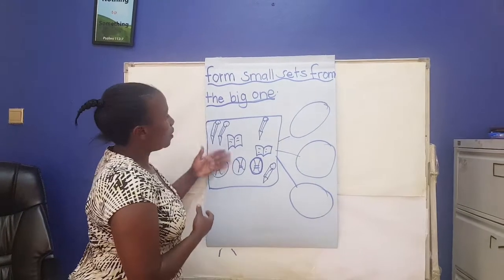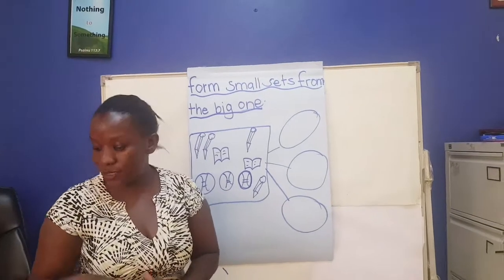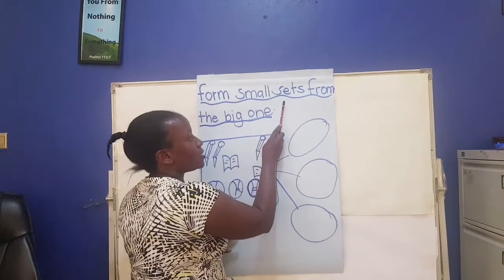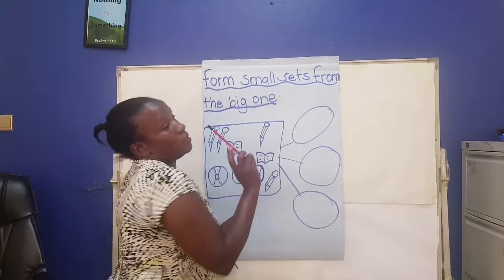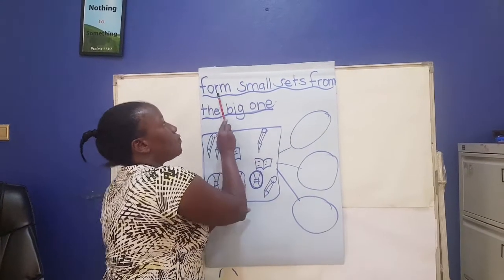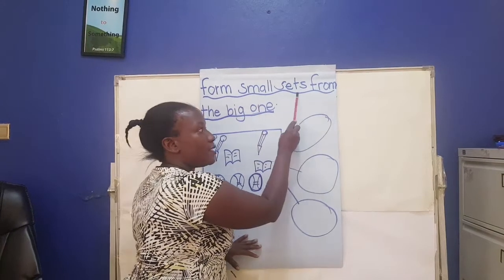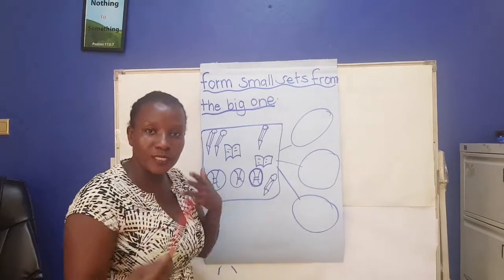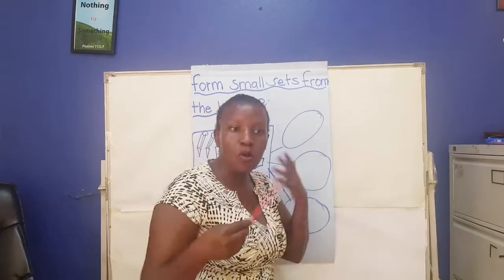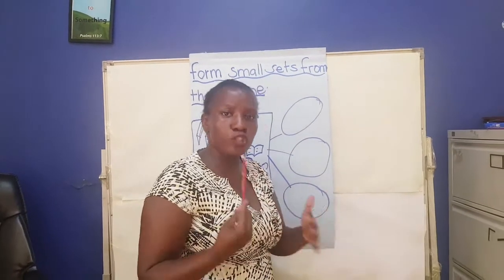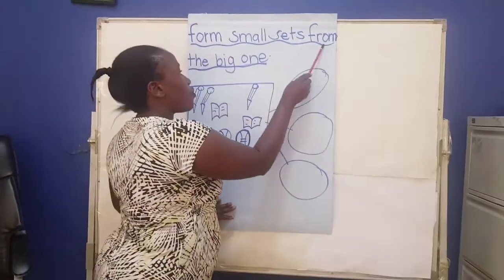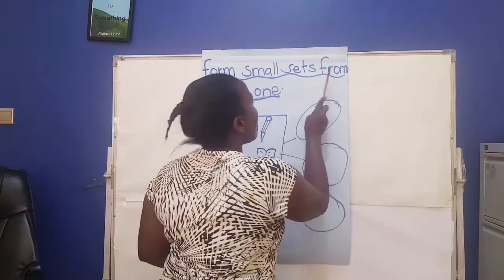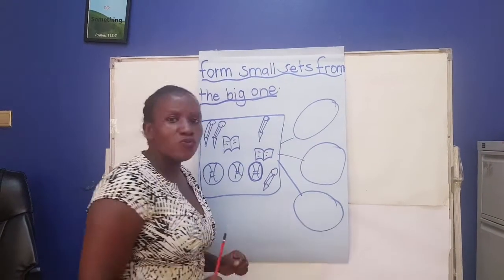We have this heading, and I want us to read together. Form small sets from the big one. Let's read together with some speed, like good children: Form small sets from the big one.